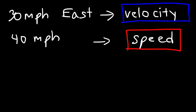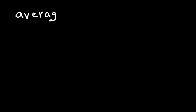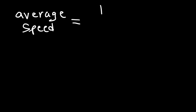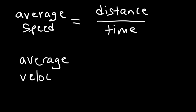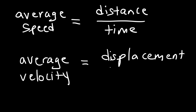Hopefully that gave you a good understanding of velocity. Now there are some equations you want to know. Average speed is basically distance divided by time — the distance the car travels divided by the time it's been traveling. Average velocity is a little different: average velocity is the displacement of the vehicle divided by time.